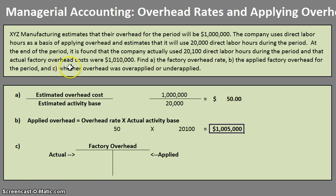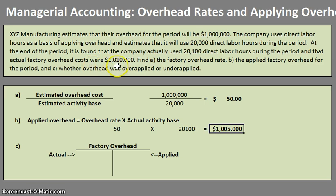Part C asks us to find whether that overhead was overapplied or underapplied. The easiest way to figure this out is to compare your applied with your actual. Our applied was $1,005,000, and going back to our problem, the actual factory overhead costs were $1,010,000. That lets us know it was actually underapplied — we didn't apply as much as we actually incurred; it's under the threshold.